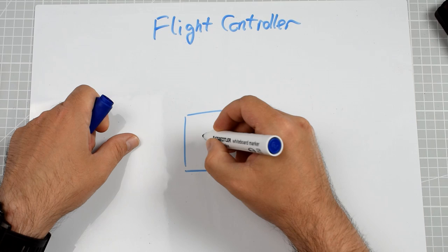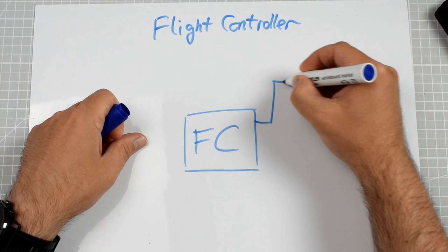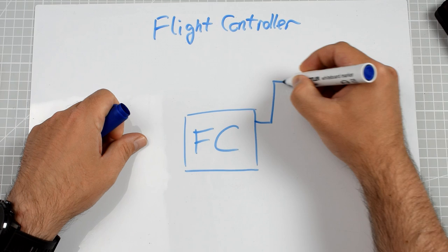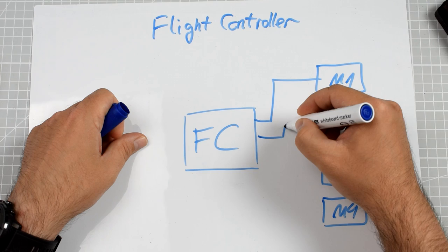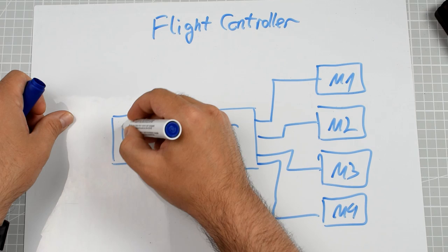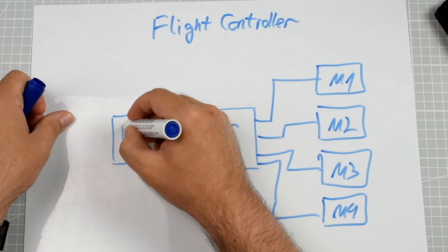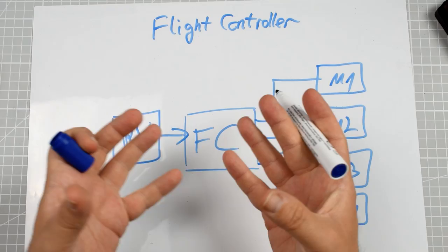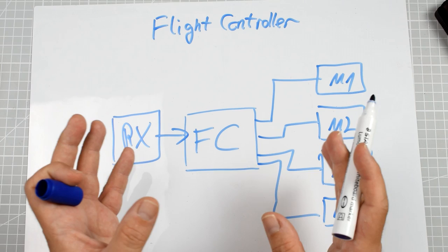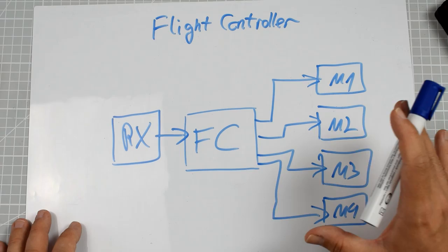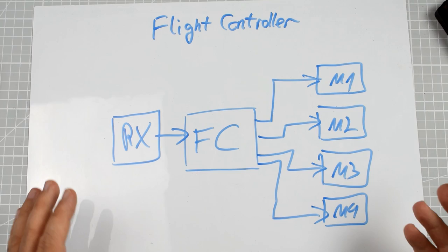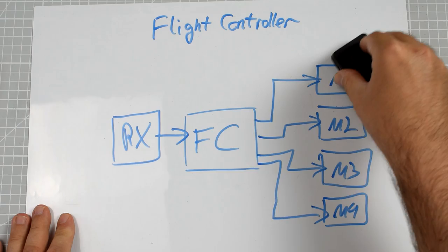If we take a look at the flight controller, it looks more or less like this: here we have the magical black box called the flight controller, and four motors M1, M2, M3, and M4. Additionally, because we would like to be able to tell the flight controller to do something, here we have the receiver. The receiver transmits the position of the sticks to the flight controller, which does some black box magic and sends information to the four motors about how fast they should be rotating and how much thrust the propellers should deliver.